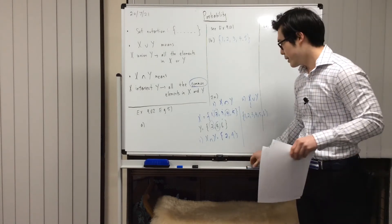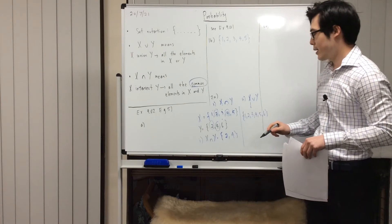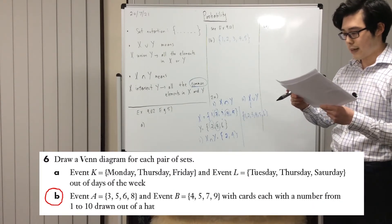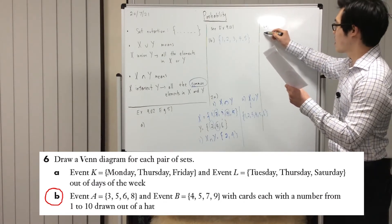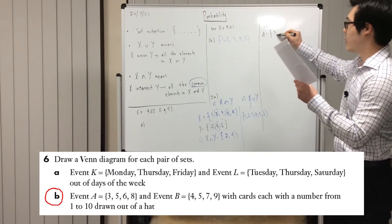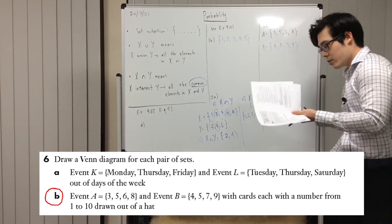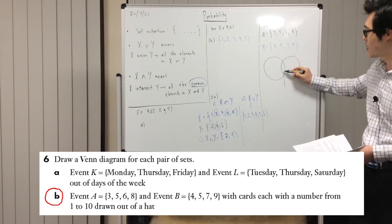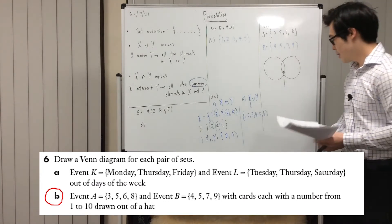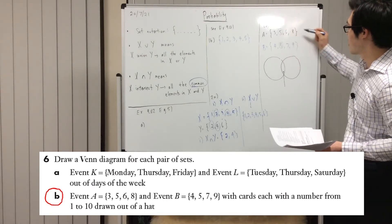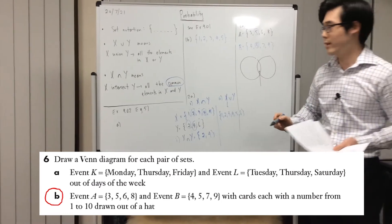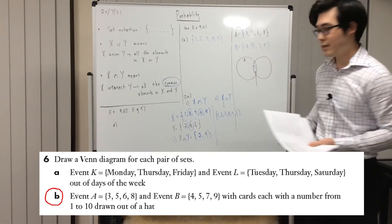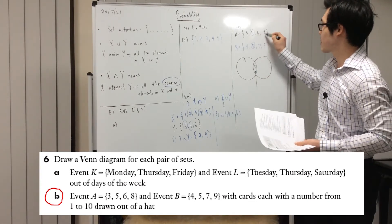You also need to be able to draw a Venn diagram for X and Y. Let's look at question 6b: draw a Venn diagram for each pair of sets. For question 6b, set A has the numbers 3, 5, and 9. To draw a Venn diagram for these two sets, start by drawing two circles. Your first step is always to write the numbers common to both A and B. The number common to both A and B is 5 — that's the only one — so write 5 in between the two circles. For the A side, write all other numbers for A besides 5, which are 3, 6, and 8.